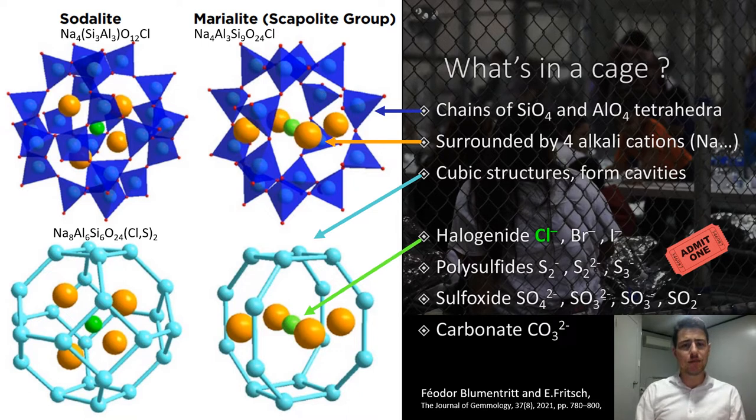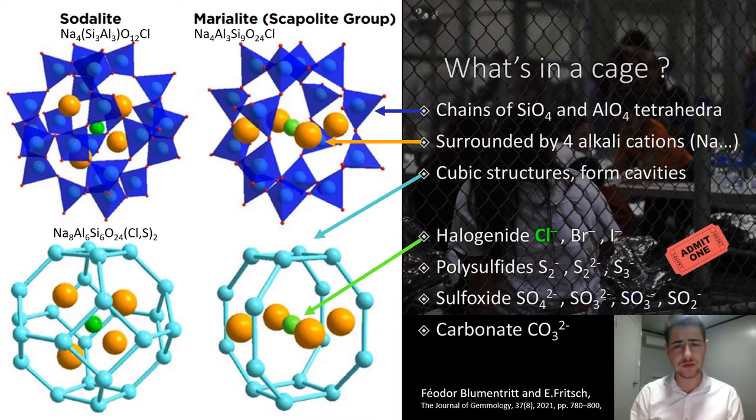Sodalite and scapolite are both aluminosilicate with very similar structure. They're made of chains of SiO4 and AlO4 tetrahedra, organized in a cubic system and forming cavities or cages. These cages are big enough to accommodate one large ion at the center, surrounded by tetrahedrons or rings of four alkali-chlorine and here sodium.